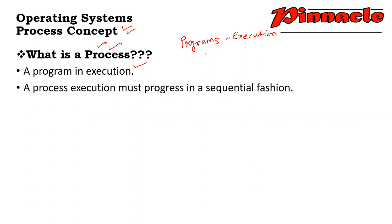For example, like your program — if we have a program with 100 or 200 lines, all the programs or all the processes should execute in a sequential fashion. In sequential fashion, all programs and processes execute.